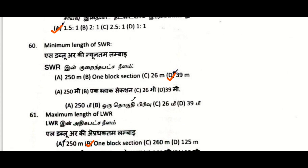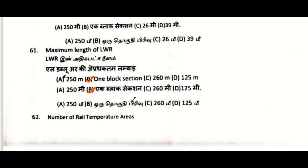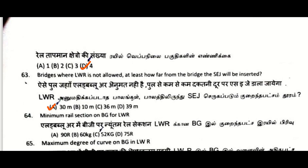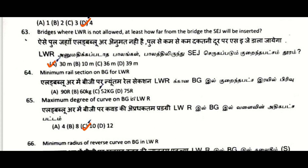Side slope of ballast stack should not be flatter than 1.5 to 1. Minimum length of SWR: 39 meters. Maximum length of LWR: maximum one block section. Number of rail temperature areas: four. Bridges where LWR is not allowed — at least how far from bridges the ACJ will be inserted: 30 meters, as per IRPWM 2020. Minimum rail section on BG for LWR: 52 kg.